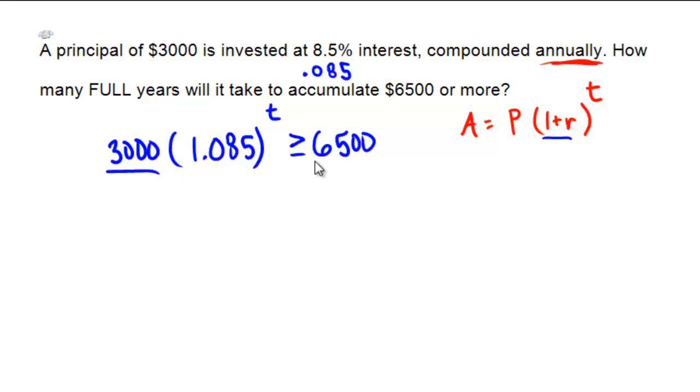First step, let's divide both sides by $3,000. So that way on the left, we have 1.085 to the power of T, and on the right, I'm not even going to bother with any simplification here because we'll probably need to break out a calculator anyway. So we'll just call it 6,500 over 3,000.